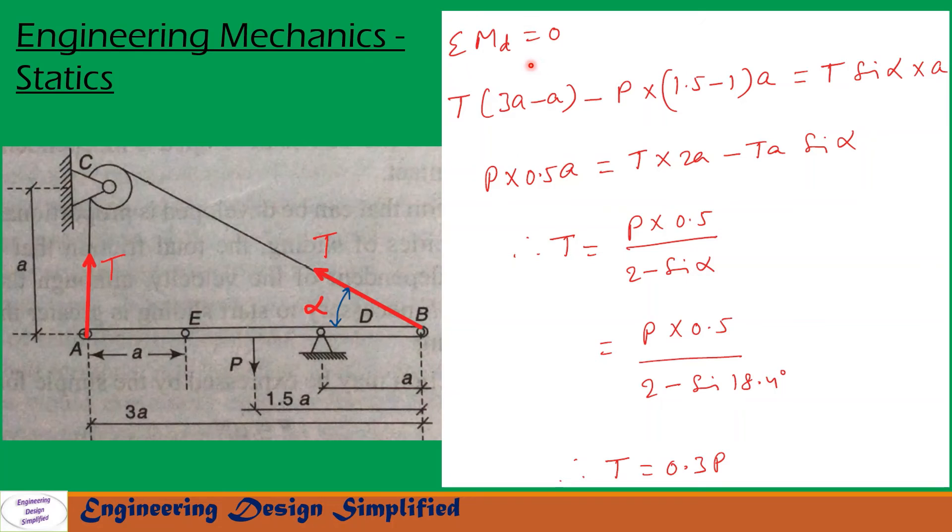Sigma MD equal to 0. Moment due to this T about D can be written as T into this distance from here to here. That is, total distance is 3A and from here to here is A. So, T into 3A minus A minus since this is producing clockwise moment and this is producing counterclockwise moment.